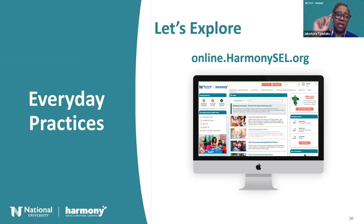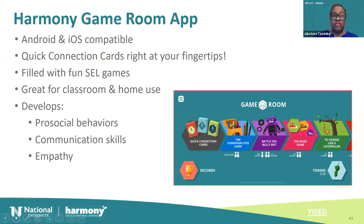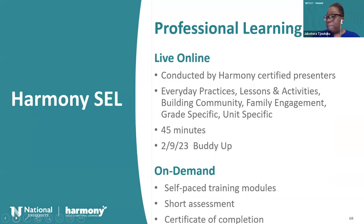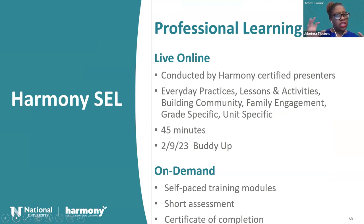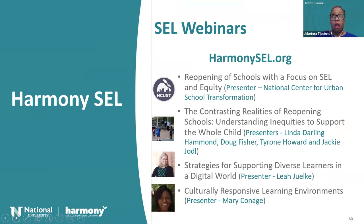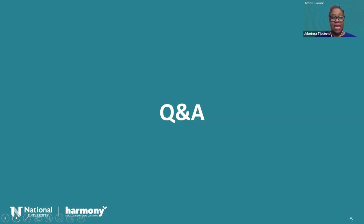When you're looking up the Quick Connection Cards, you can either print them out or display them virtually. The 'pass a smile' is on the Community Builder. So let's wrap up: we talked about creating Harmony Goals, levels of accountability, belonging in Meetup, and the different intentional activities you'll use in Meetup. I gave you the link to the portal. What are you going to do to get ready for Meetup? How are you going to get your children into that circle to greet, share, connect, and talk about Harmony Goals? We also have a Harmony Game Room app — you can find it in the Mac Store or Google Play. On 2/9/23 we will get together again to talk about Buddy Up.